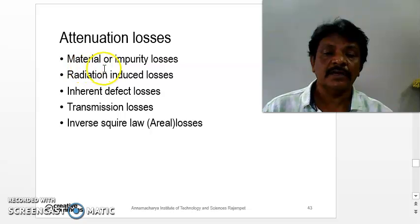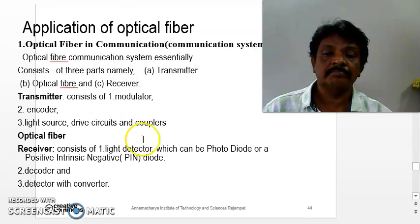The attenuation losses are material or impurity losses, radiation induced losses, inherent defect losses, transmission losses, and inverse square law losses. These are also other losses in the case of attenuation.